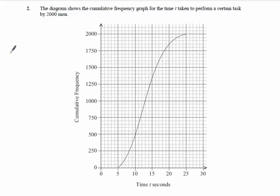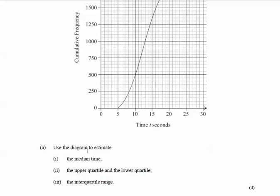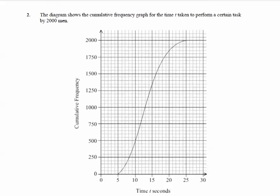Let's look at this exam question to do with cumulative frequency curves. The diagram shows a cumulative frequency graph for the time t taken to perform certain tasks by 2,000 men. We have time in seconds on one axis and cumulative frequency on the other — remember this means running total. The questions ask us to estimate the median time, the upper quartile, the lower quartile, and the interquartile range.